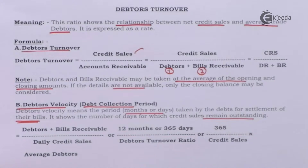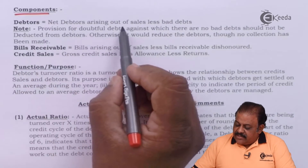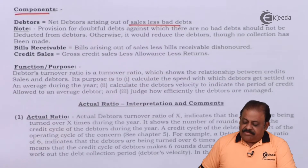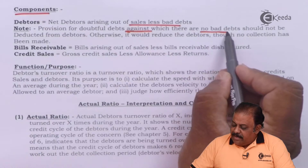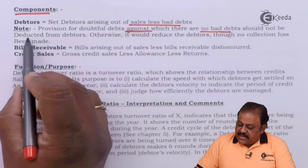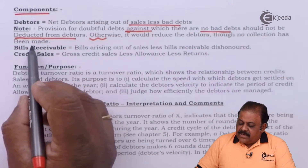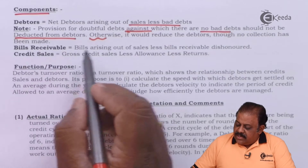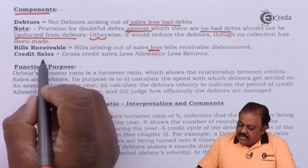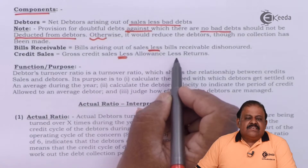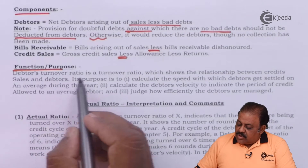The components of the formula are: Net debtors — debtors arising out of sales less bad debts. Note: provision for doubtful debts, against which there are no actual bad debts, should not be deducted from debtors, otherwise it would reduce the debtors though no collection has been made. Bills receivable — arising out of sales, less bills receivable dishonored. Credit sales — gross credit sales less sales returns or allowances.